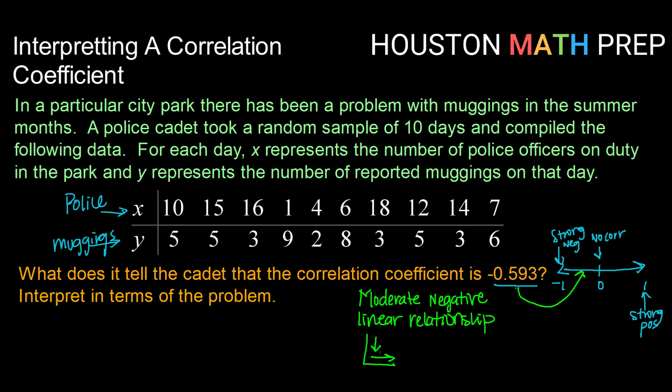And a moderate relationship means that they're generally going in the same direction, they're generally following the line, but they're a little bit more scattered. So it's not a super strong relationship, but it is noticeable.